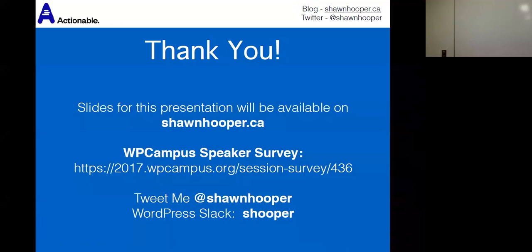Q: With so many things to test on a big site, how do you prioritize? A: First, identify key business drivers — what breaks and stops you making money? Test those first: shopping carts, registration processes, contact forms. Second, if you're retrofitting tests, write a test each time you fix a bug to validate that fix. Ultimately, build tests alongside development from day one, but start with critical components and known bugs.